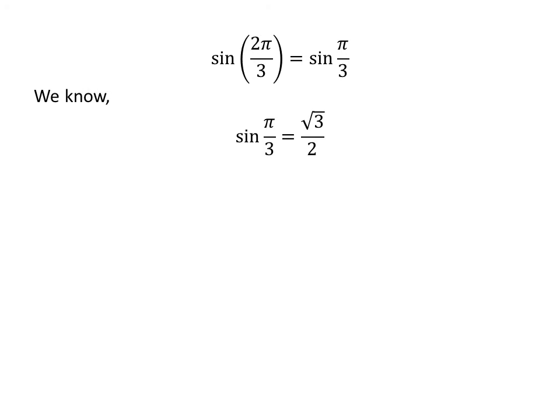We know sine of pi upon 3 is equal to square root of 3 upon 2. So, sine of 2 times pi upon 3 is equal to square root of 3 upon 2.